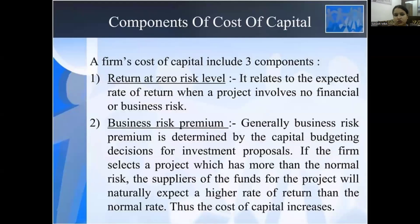Components of cost of capital. First is return at zero level. It relates to the expected rate of return when the project involves no financial risk or business risk. Second is the business risk premium. Generally, business risk premium is determined by capital budgeting decisions or investment proposals. If the firm selects a project which has more than normal risk, the suppliers of funds for the project will naturally expect a higher rate of return than the normal rate, and cost of capital increases.